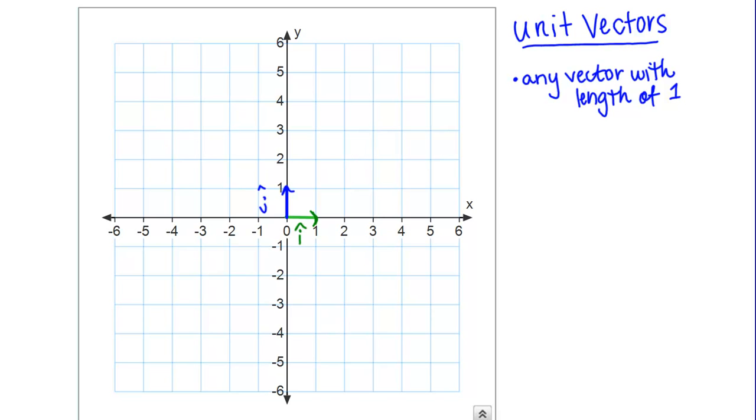What I've just drawn in the picture here are what are called the coordinate unit vectors. They have special names. One of them is called i and one of them is called j.